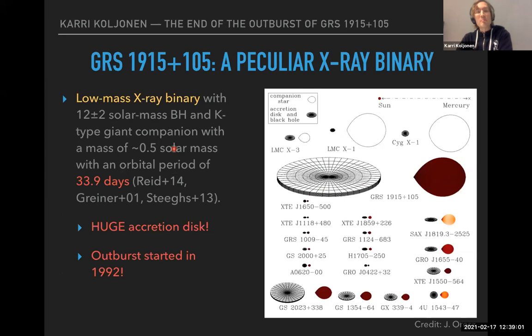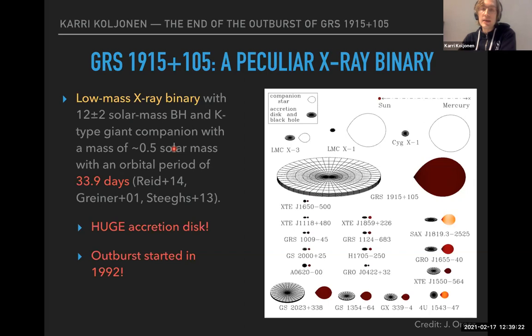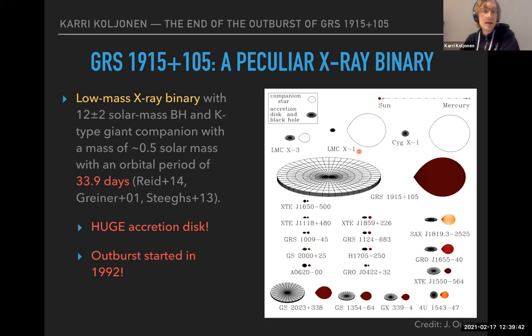It's a peculiar system — a low-mass X-ray binary with the longest known orbital period of about 34 days. It consists of a 12 solar mass black hole and a K-type giant companion with about half a solar mass. This long period allows the accretion disk to be very large — in fact the largest of all known X-ray binaries. Having such a huge accretion disc allows very long outbursts. GS 1915 started its outburst in 1992 and has been going ever since, for almost three decades.